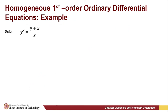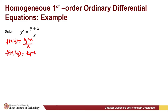We have another example. This is clearly a homogeneous equation. We have f(x, y) = (y + x) / x. Applying f(tx, ty) = (ty + tx) / (tx) = t(y + x) / (tx), which simplifies to (y + x) / x. So we have a homogeneous differential equation.